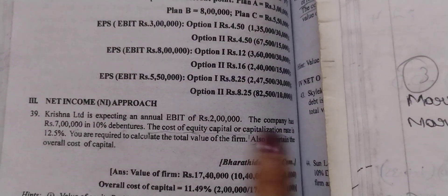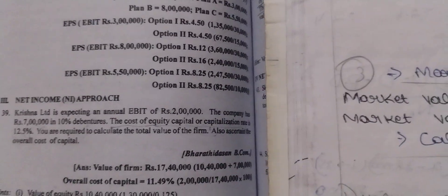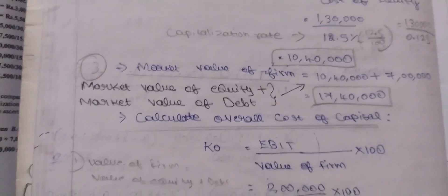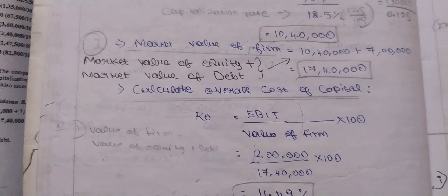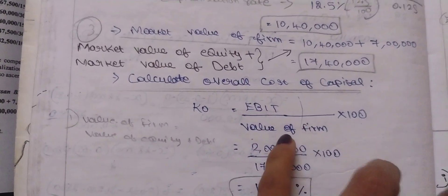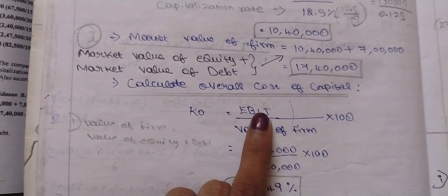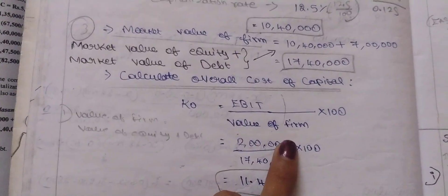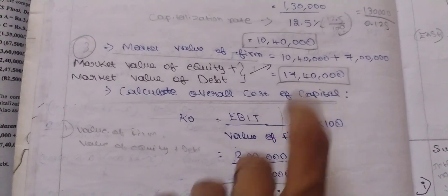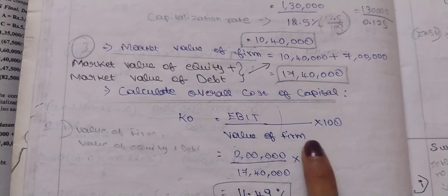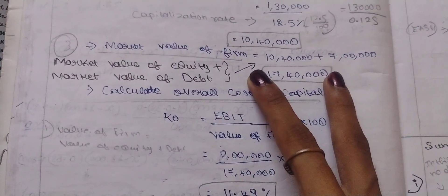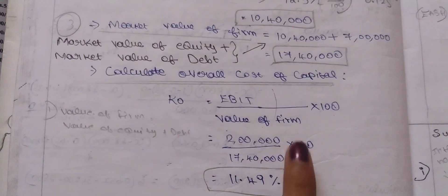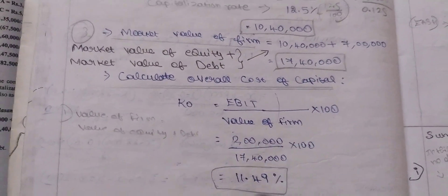Now for the overall cost of capital: Ko equals EBIT divided by value of firm, multiplied by 100. EBIT is 2,00,000 divided by value of firm 17,40,000, multiplied by 100, which gives 11.49%.